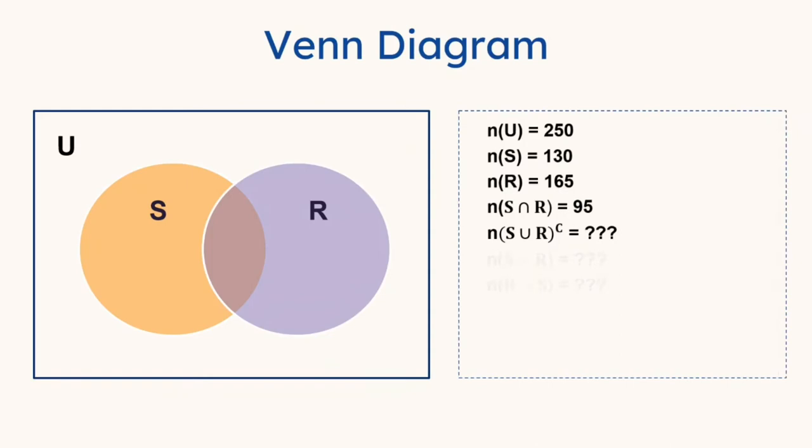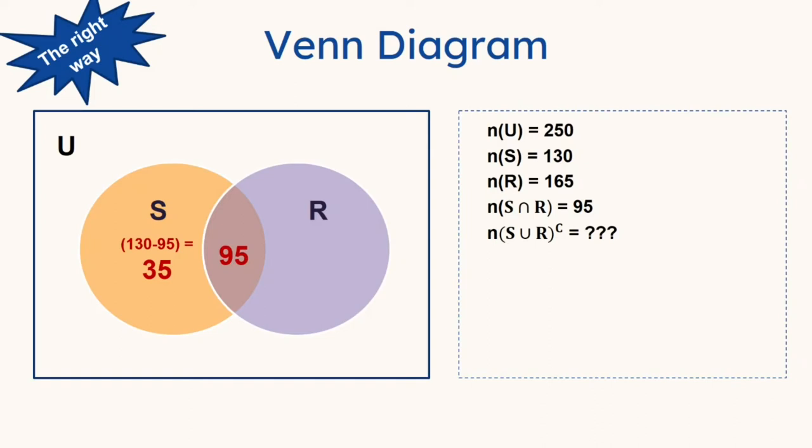Now here's the correct way. You start with the 95, the one in the intersection, the one in the middle. N of S intersection R. That's 95. Then you go to the left with S to determine that the number of orders that has sushi in them only is 130 minus 95. Because the 95 is already in the intersection of S and R, which leaves you with 35 on the S side. We do the same with the R side. That's 165 minus 95, which equals to 70. Out of the 165, 95 are already in the intersection part. And thus we are left with the 70, which is only on the R side.